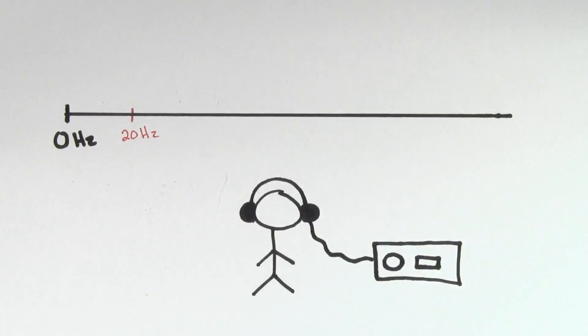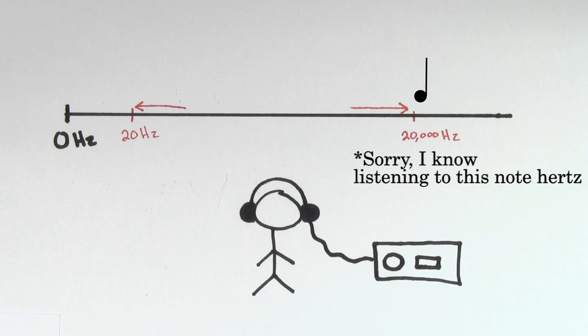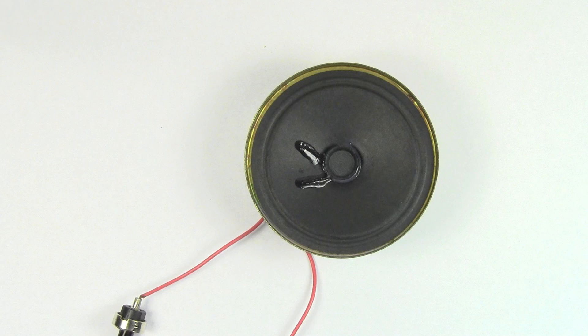Humans can hear frequencies as low as about 20 hertz, and as high as about 20,000 hertz. But if a speaker were to oscillate air back and forth more than about 20,000 times per second, it would create sound waves, but we wouldn't be able to hear them.